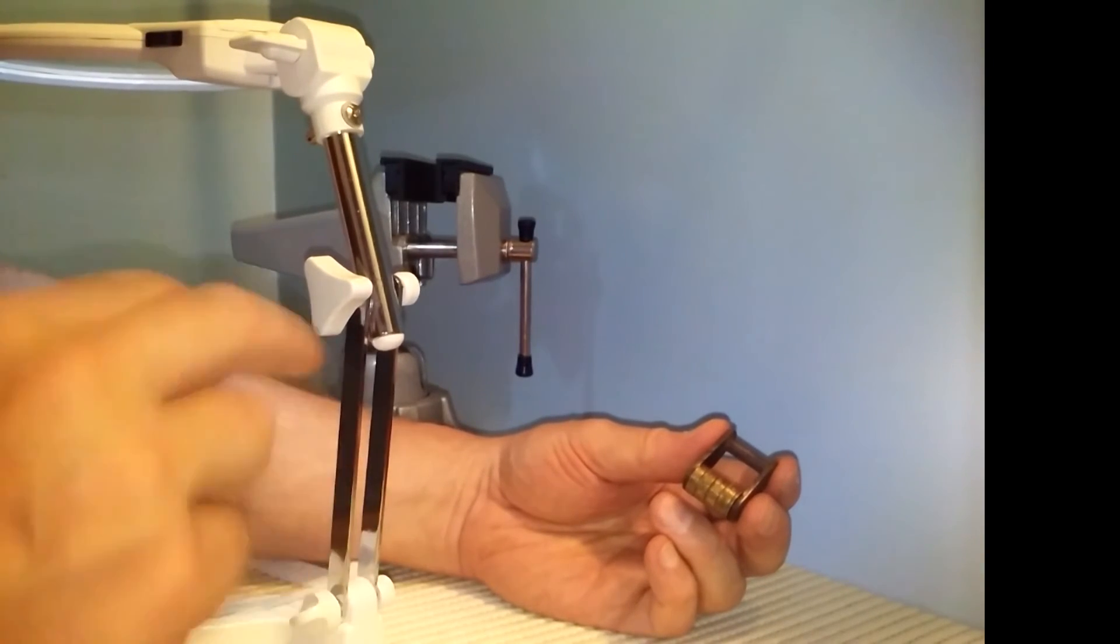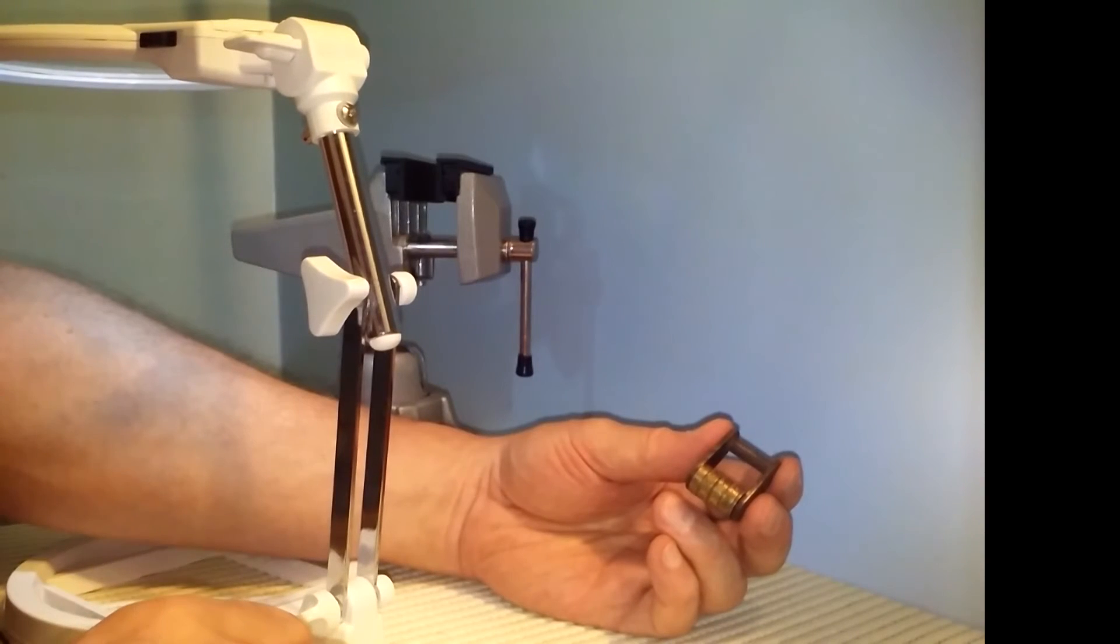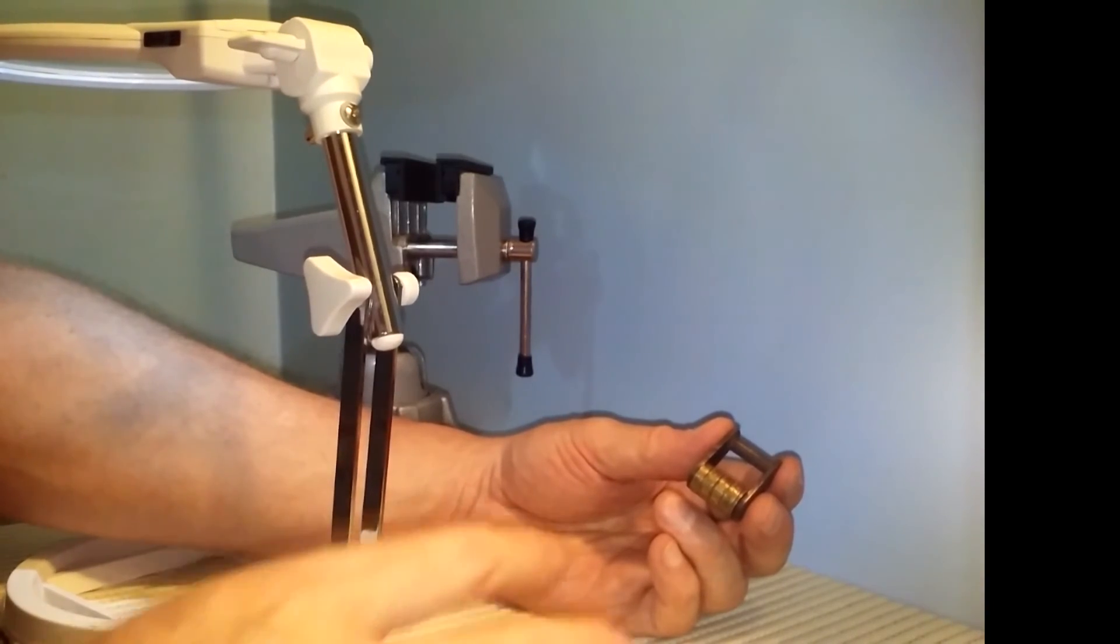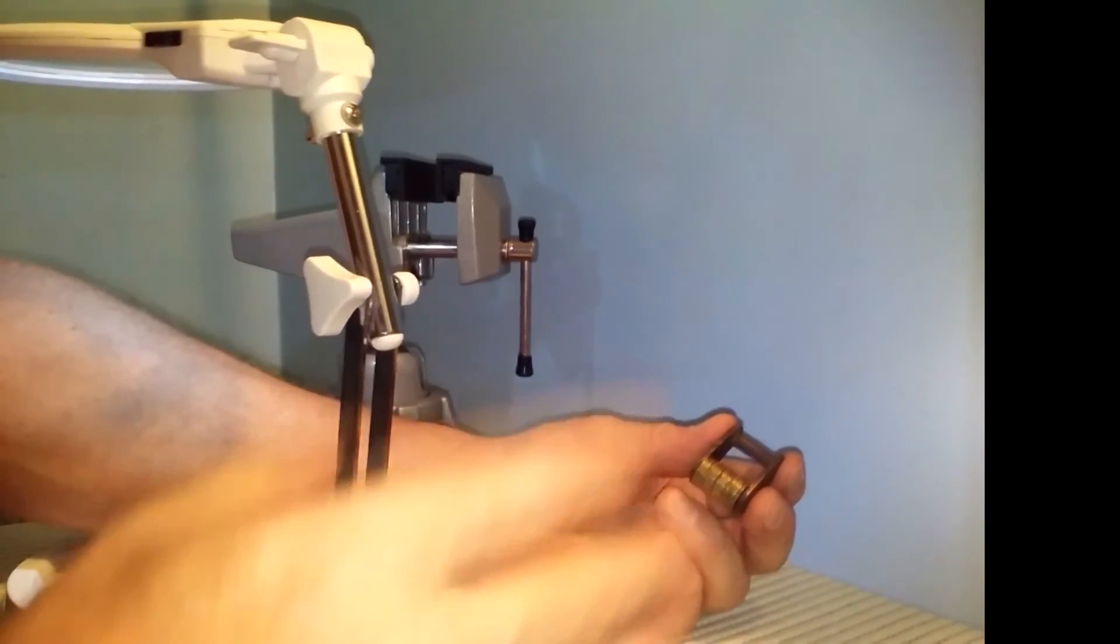So out of the three vintage and antique combination locks I have, two of them I've opened having no clue what I was doing. And then the one that I actually think I know what I'm doing, and I can't get it open.